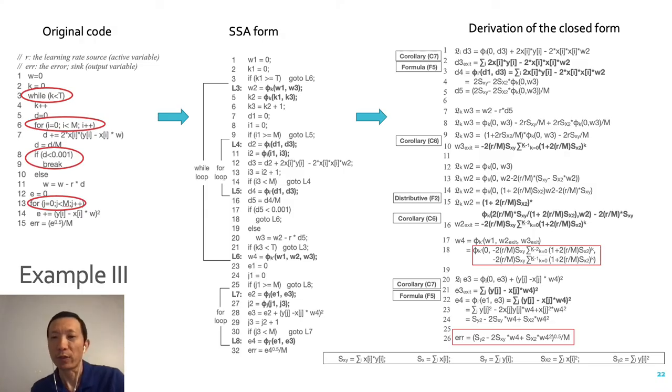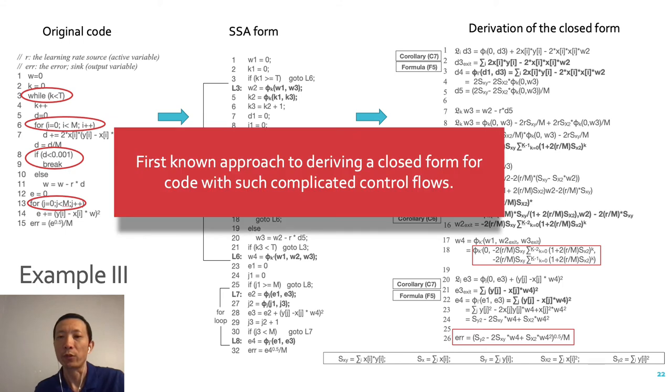This example is more complicated. It has three loops, one if-else and one break statement. Phi calculus works well still, producing the simplified symbolic expression, on which symbolic differentiation can be easily applied. This is the first known approach to deriving a closed form for code with such control complexities.